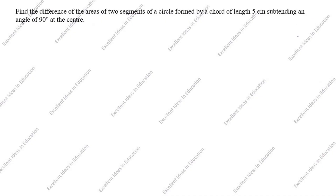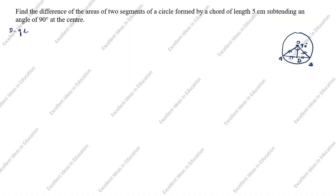What is given in this question? First we will draw the circle. This chord is 5 centimeter, subtending an angle of 90 degrees at the center. This is the center of the circle. Join the line — this is 90 degrees. Now we will join this line and write the naming A, B, D. This length and this length is the same, and this length and this length is the same.